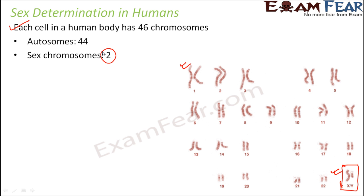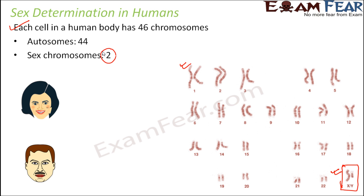The sex chromosomes will be different in case of males and females. In a human female, she is going to have the same sex chromosomes, represented as XX. Whereas in the male, they will have XY. The Y chromosome is a little smaller than X, and the sequence of genes is also not exactly similar. So this is how males have XY and females have XX.